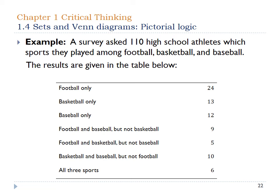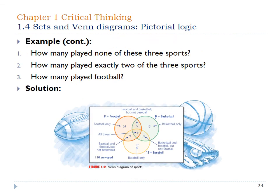Here's another three-set example: football, basketball, and baseball with 110 high school athletes. We have football and baseball but not basketball, football and basketball but not baseball, basketball and baseball but not football, and all three sports — giving us all this information. These numbers won't add up to 110 because of the overlap pieces. If you look at the next Venn diagram with all the information, you can see how those numbers are represented.